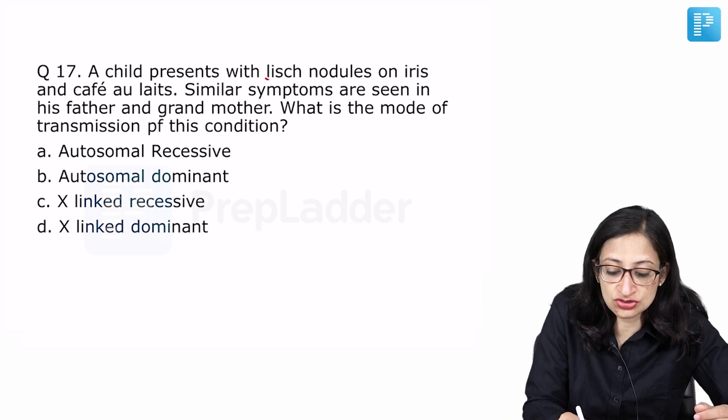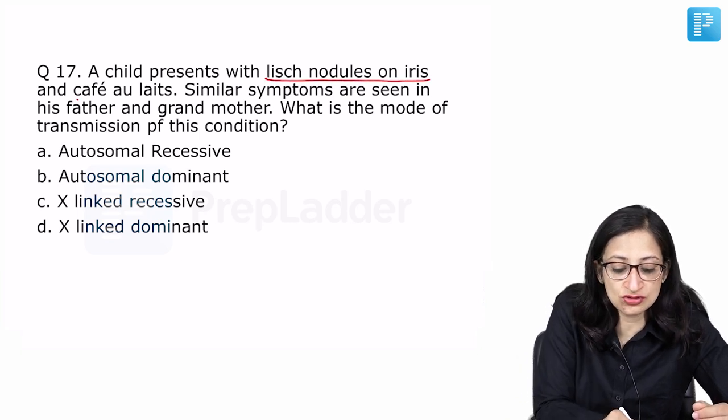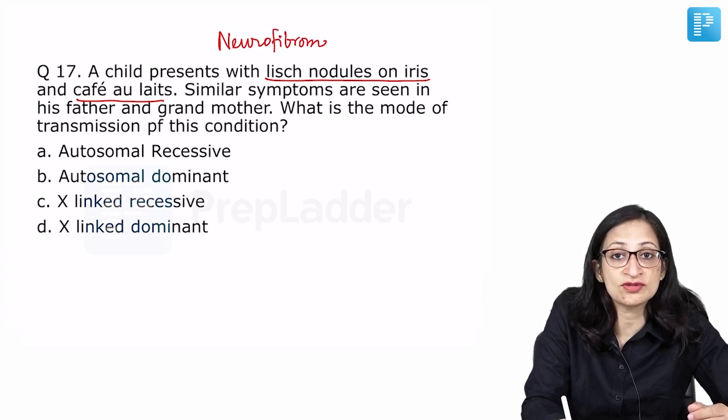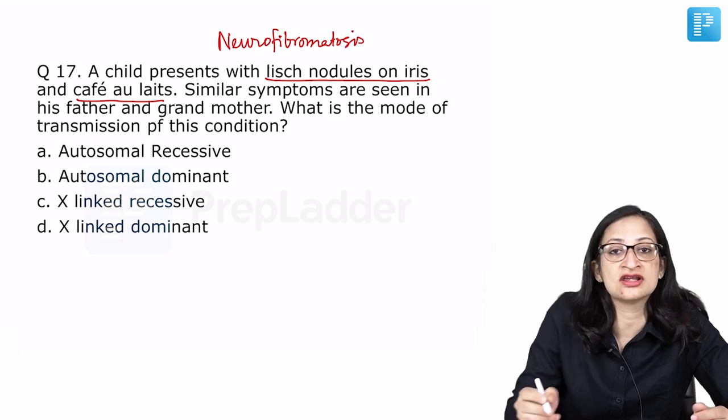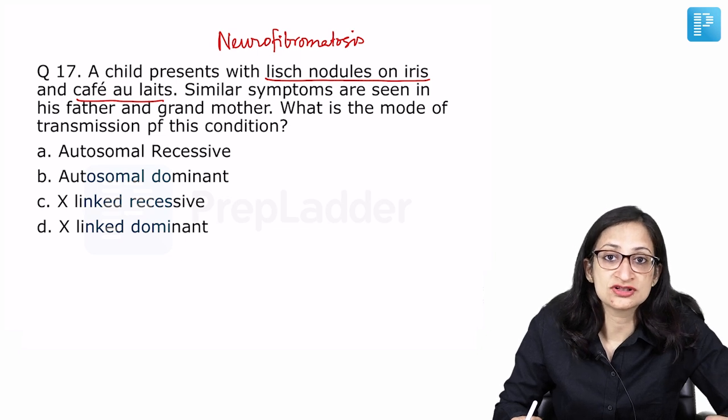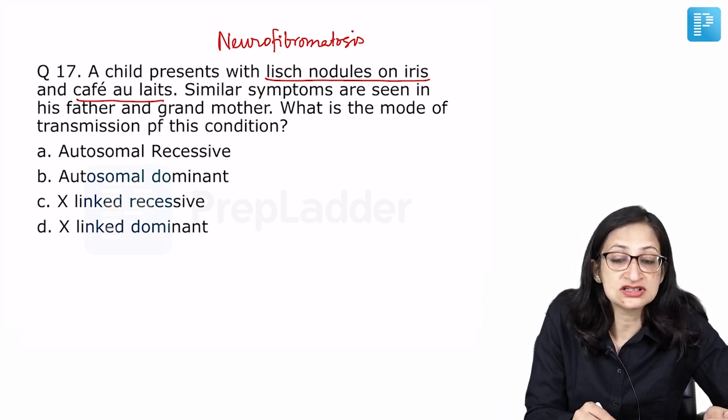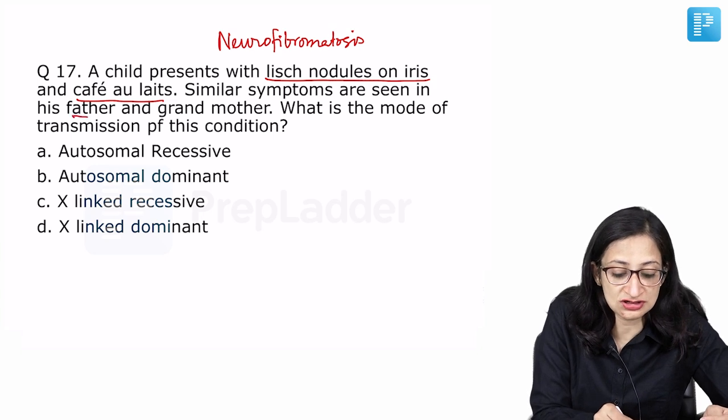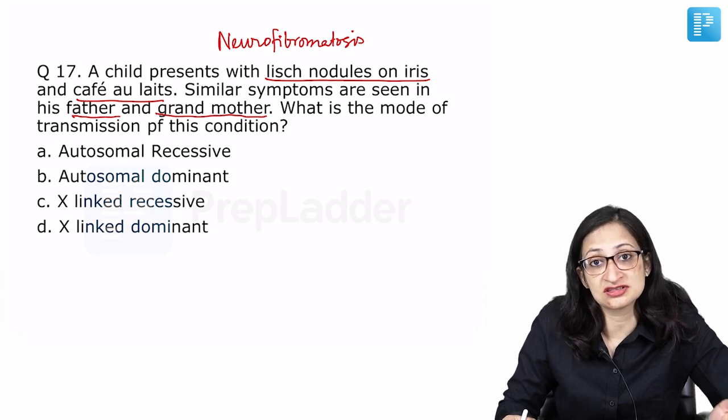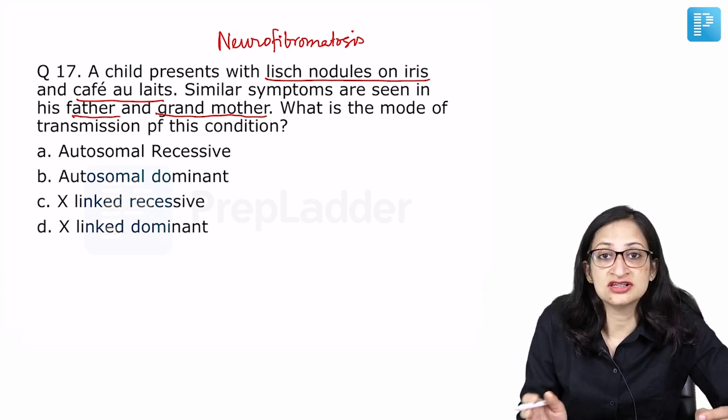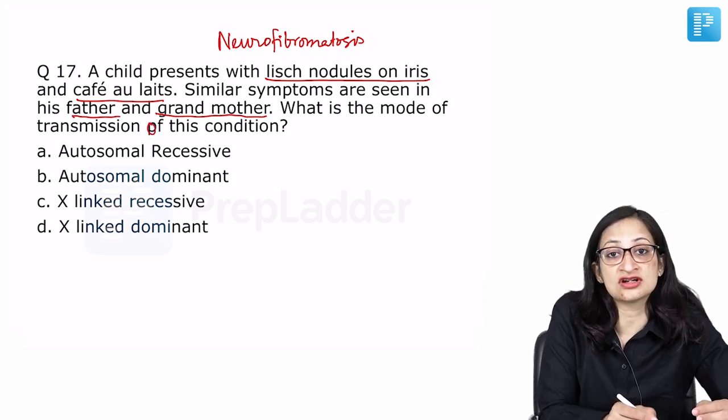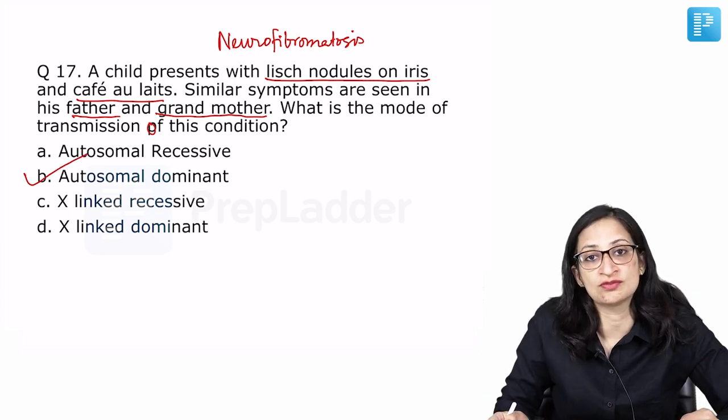A child presents with Lisch nodules on iris and cafe-au-lait spots. Both these are suggestive of neurofibromatosis, a neurocutaneous condition, neurofibromatosis where you can also get axillary freckling, similar history in the relatives. You can get neurofibromas or some CNS tumors can also be there. Similar symptoms are seen in his father and grandmother. You can see it looks like a autosomal dominant condition because the parents of the child and the parents of the parents that is the grandparent is also having these problems. What is the mode of transmission of this condition? Mode of transmission of this condition is autosomal dominant. We all know for neurofibromatosis.